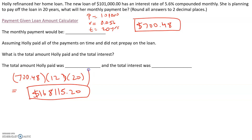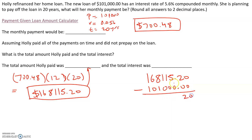Now to get the total interest, we're going to take the amount she actually paid, which is $168,115.20, and subtract the actual loan that she needed, which is $101,000. So her total interest paid is the actual amount she paid minus her loan amount. That leaves the interest that she paid, which was $67,115.20.